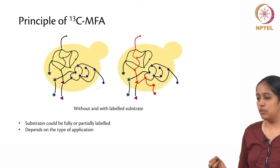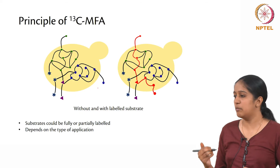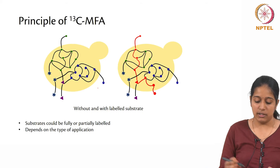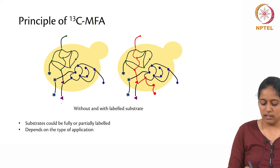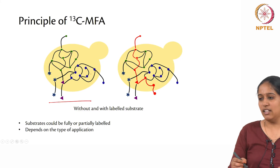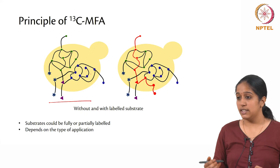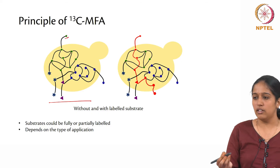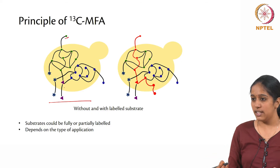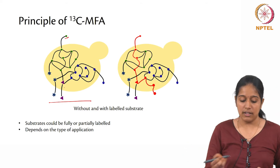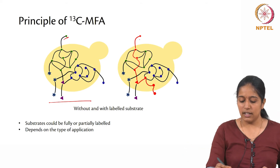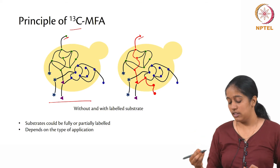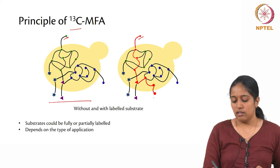Now I would like to move to the principle of how we carry out C13 metabolic flux analysis in experiments. Consider two different systems where you have a pathway — this is basically a depiction of an E. coli cell where you have multiple pathways that act in tandem and produce biomass. You might want to trace the fate of a particular source you give and see what products or pathways are activated based on that substrate. For that, you give a labeled substrate — that is a C13 labeled substrate — and trace where the C13 goes to check out the pathways where these are involved.